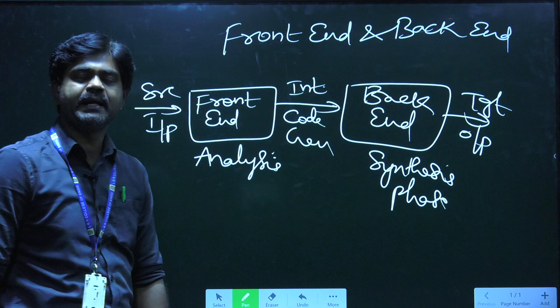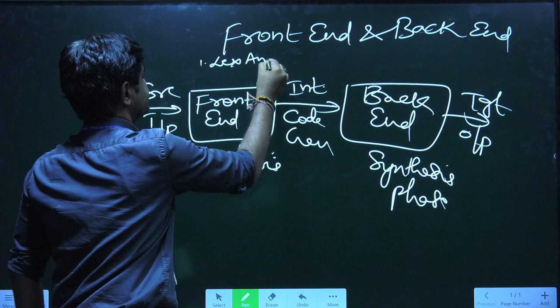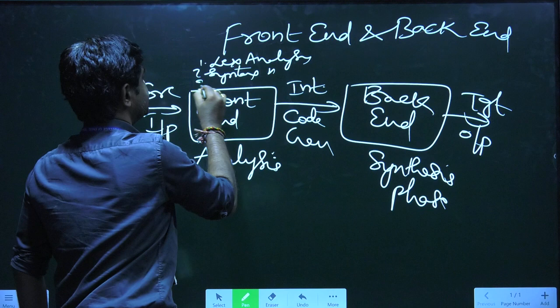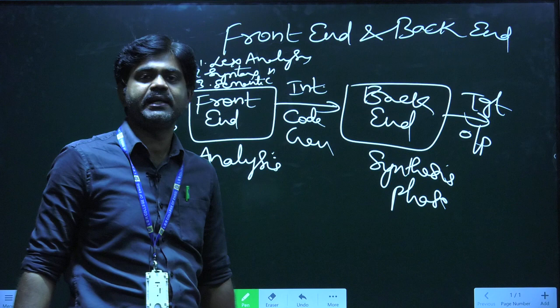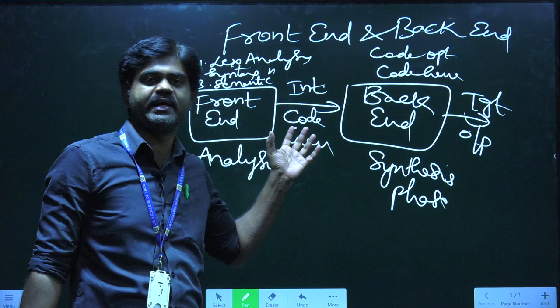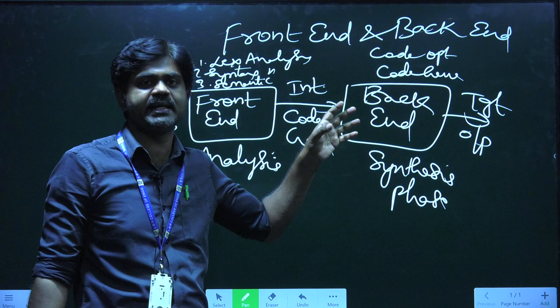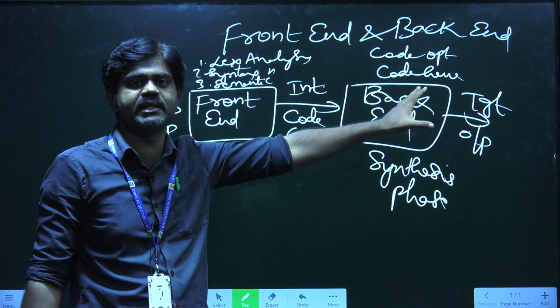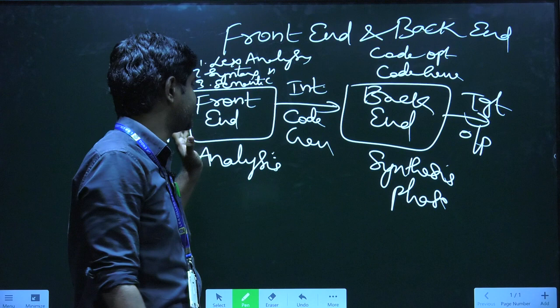The front end of a compiler contains three phases: lexical analysis, syntax analysis, and semantic analysis. The back end of a compiler contains two phases: code optimization and code generation. In between the front end and back end, we have intermediate code generation.